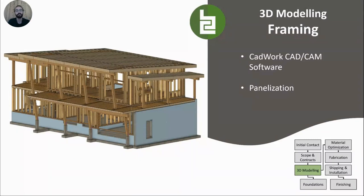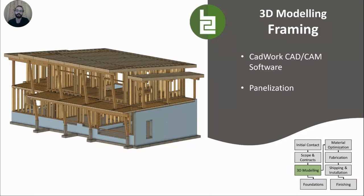Once we're happy with the 3D model — having framed the whole house and added every structure and every clip — this model becomes the master reference for what the house is going to be built with. No matter what's on the architectural or structural plans, the model dictates how the house is built. It's important for architects and engineers to review this model to be sure they are satisfied with everything in it. We're able to share the 3D model with them so they can walk around the house, look at every connection, every opening, and all the geometry, and essentially sign off on it.